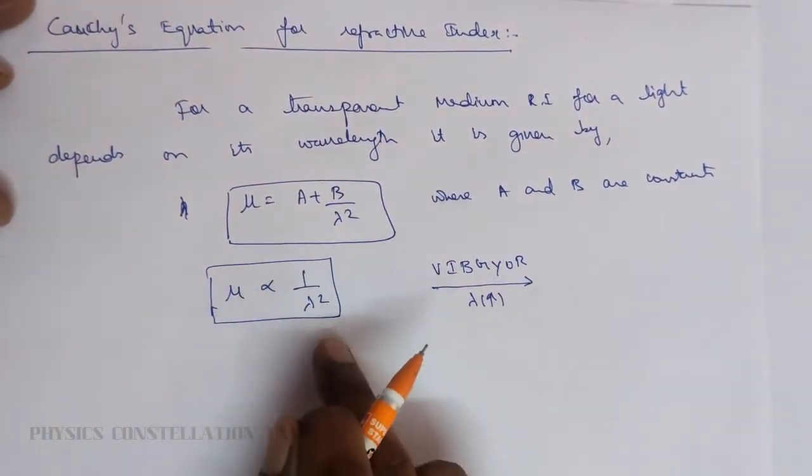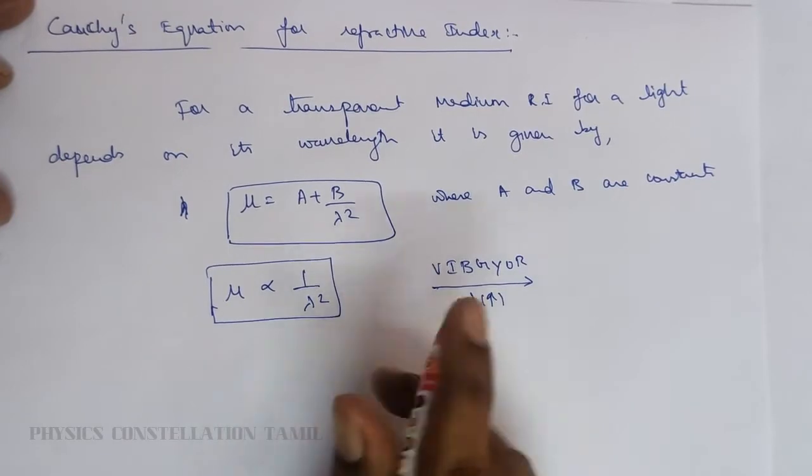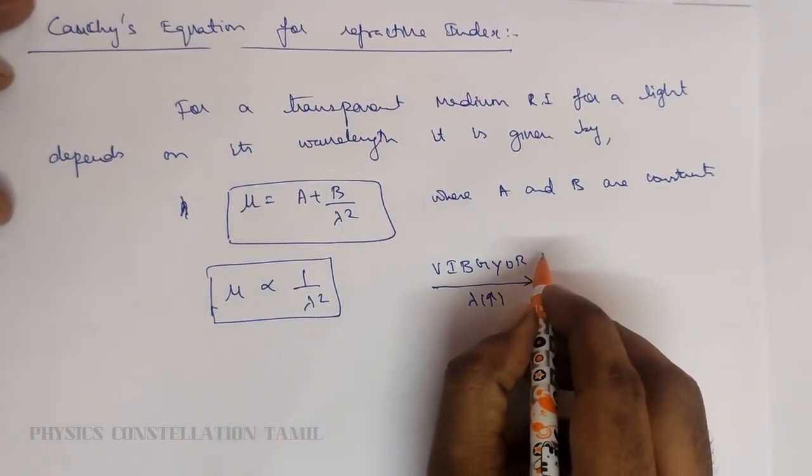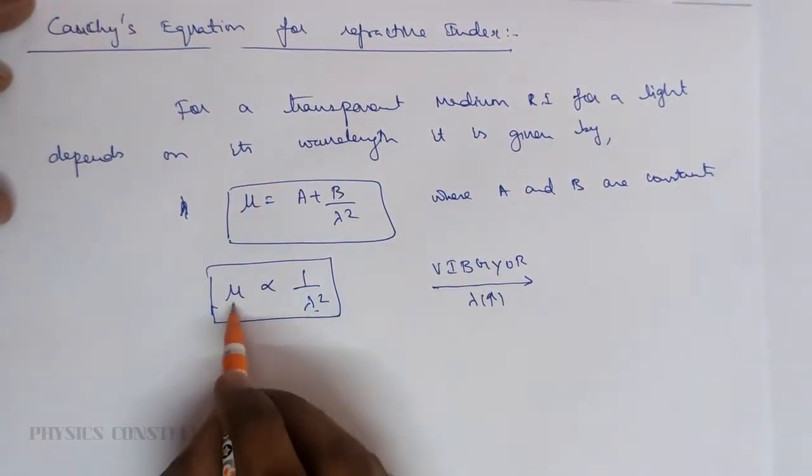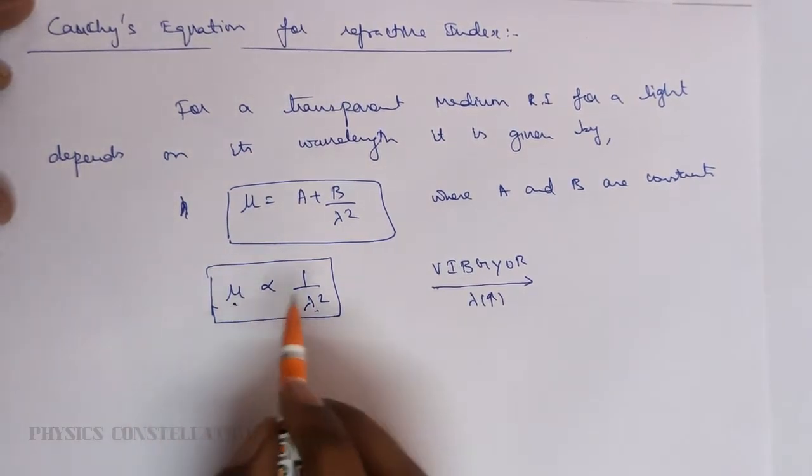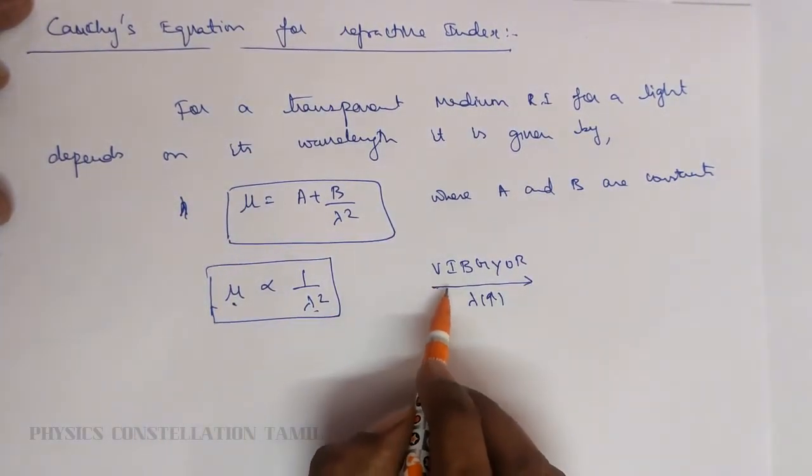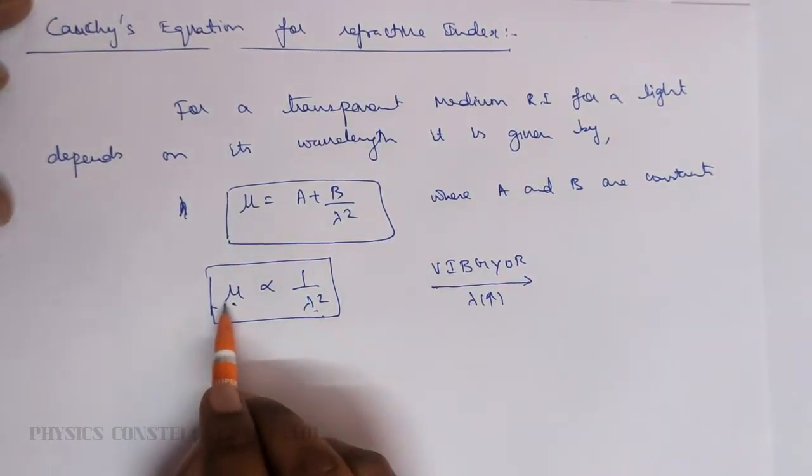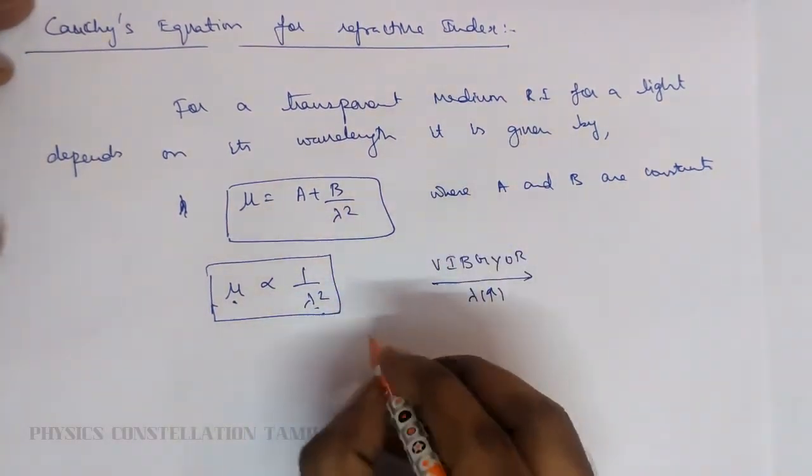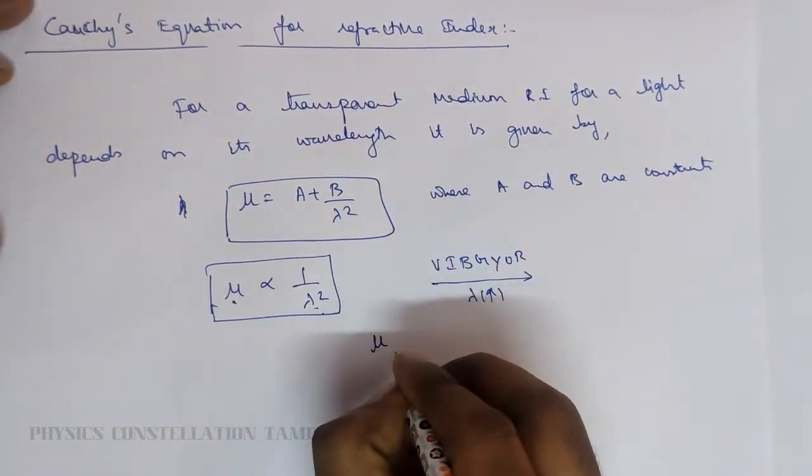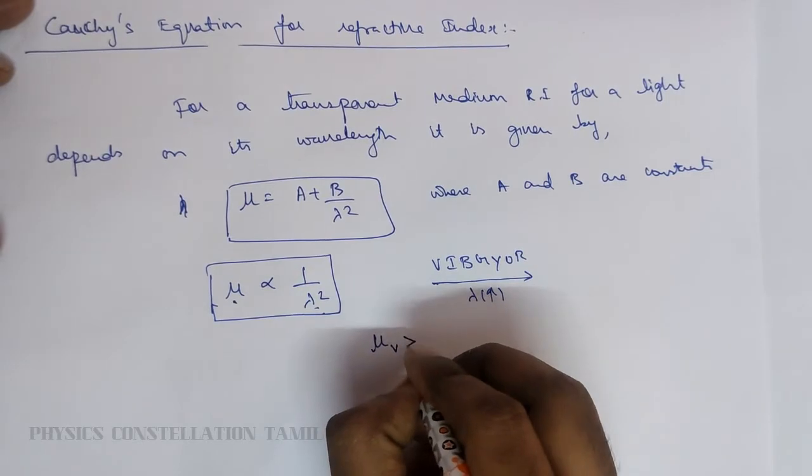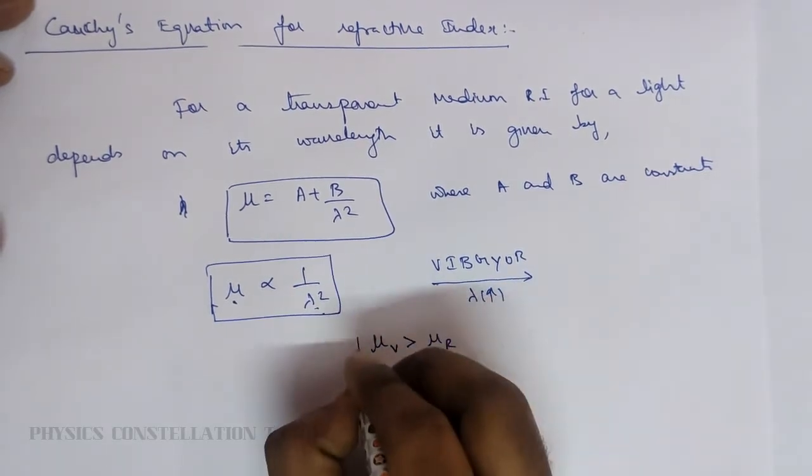Now refractive index and wavelength inversely proportional here. Red has maximum wavelength, so refractive index minimum. Violet has minimum wavelength, so refractive index maximum. We can write refractive index of violet is greater than refractive index of red.